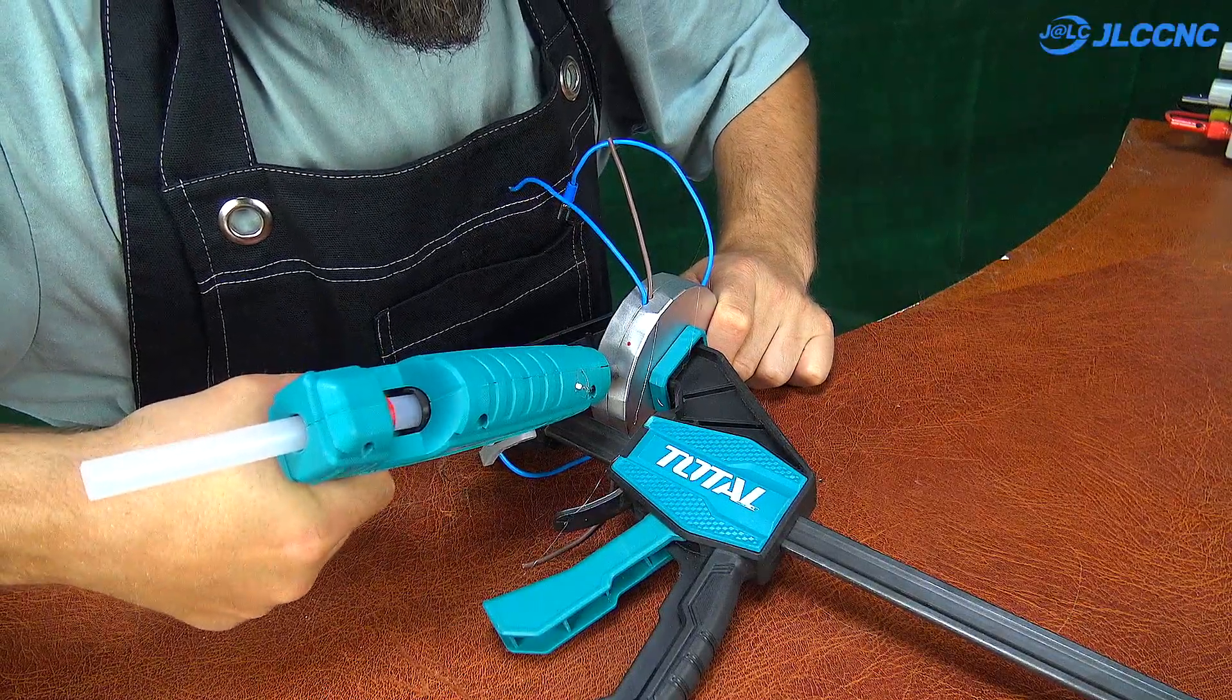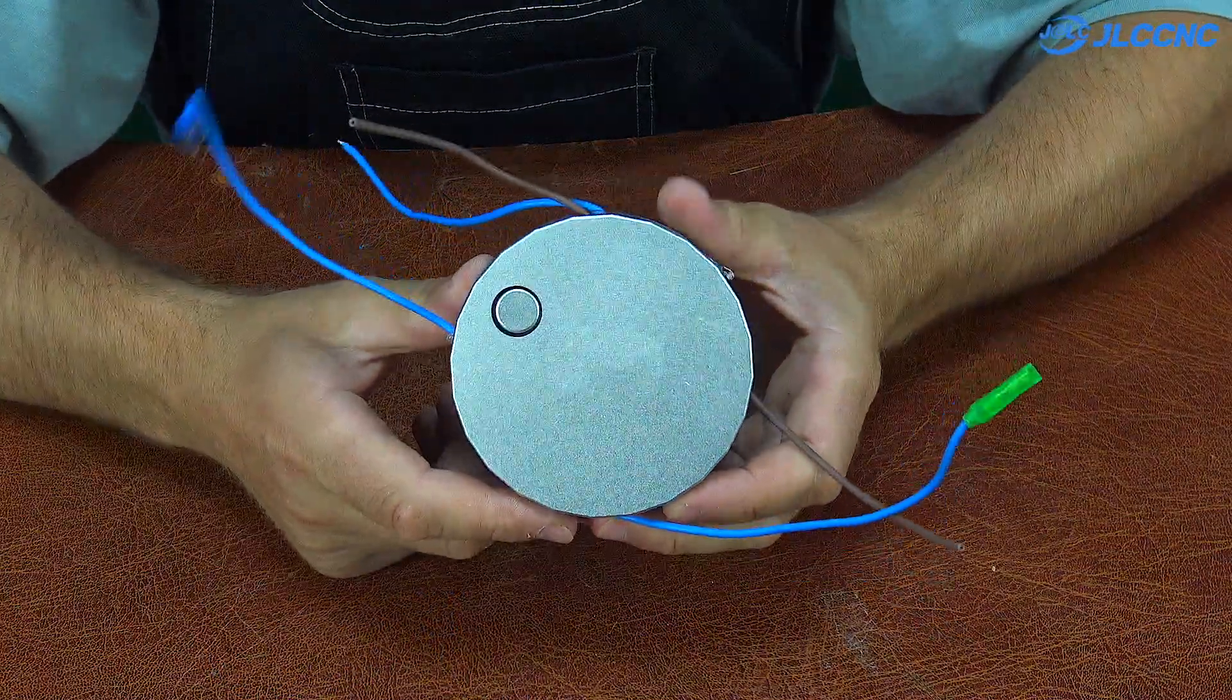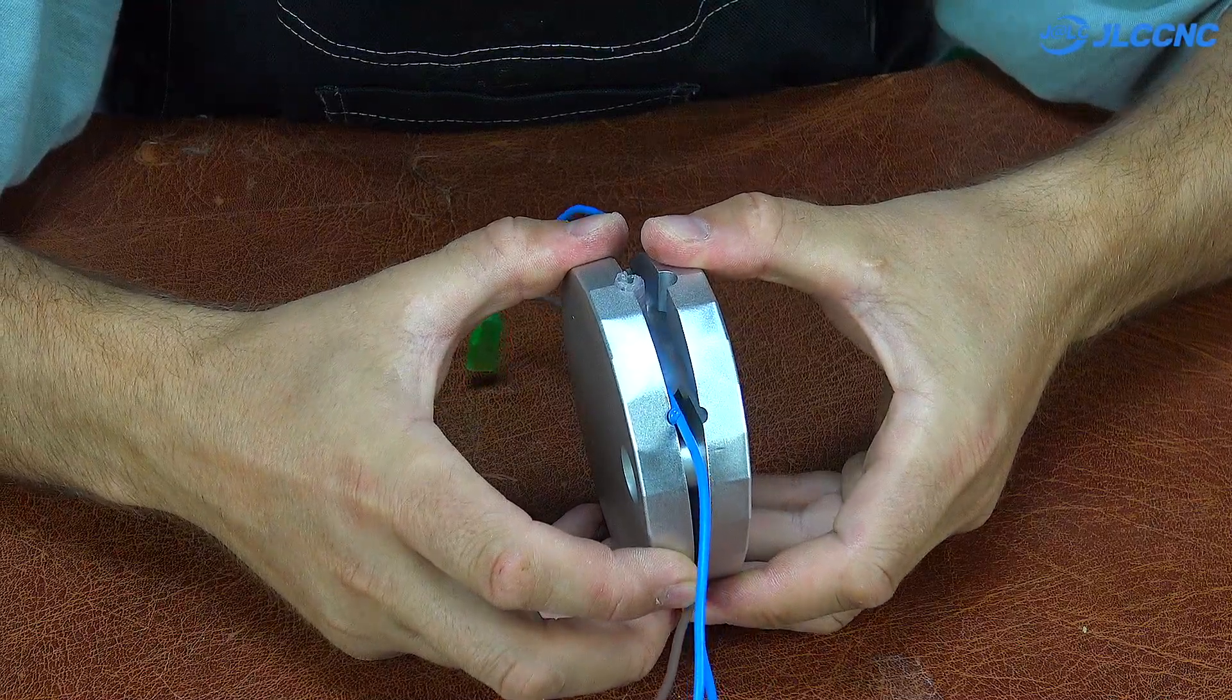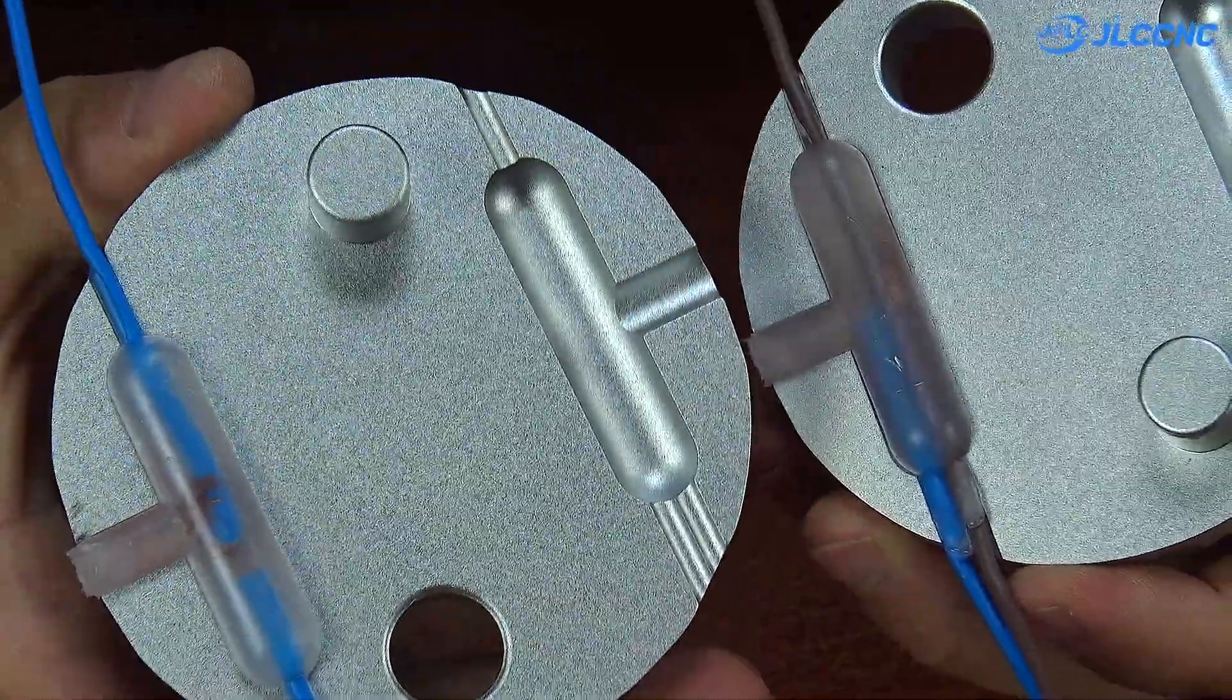For the first test, I decided to use a simple translucent hot glue stick, and it performed perfectly. The material filled all the gaps in the mold evenly and created a fully sealed coating around the wires.